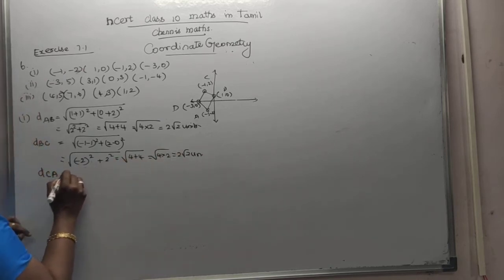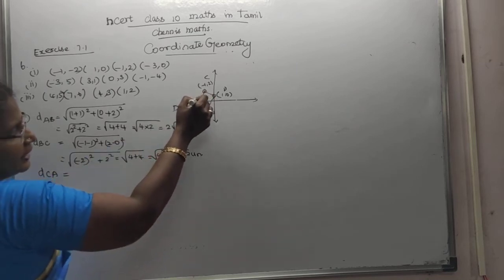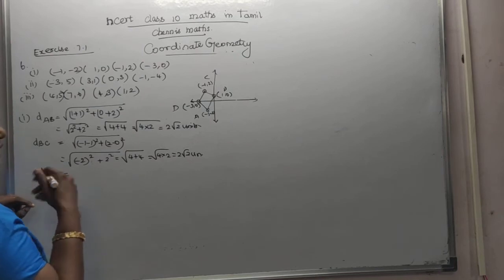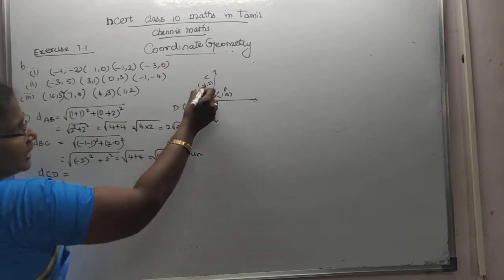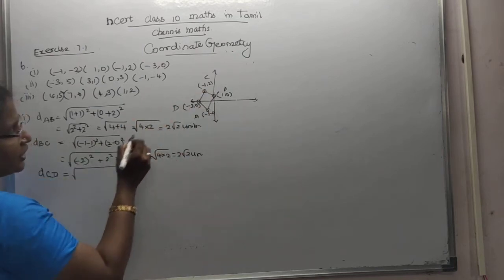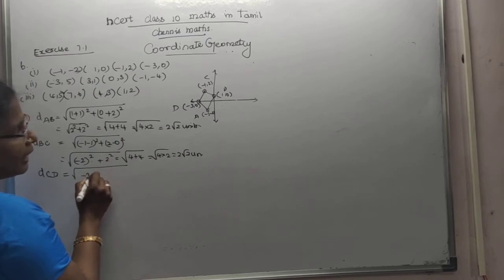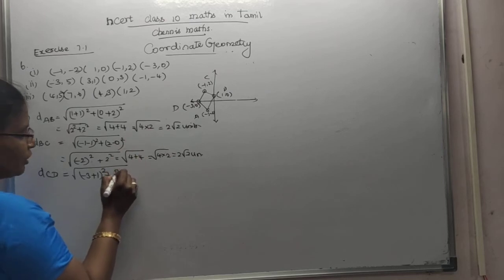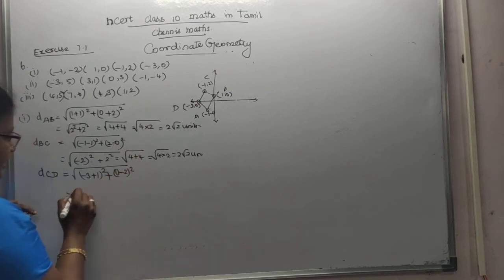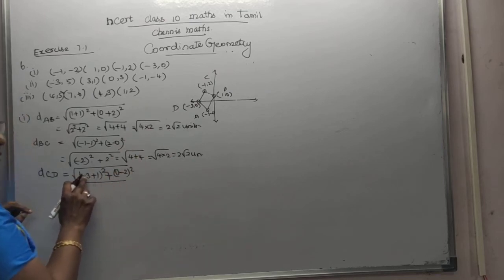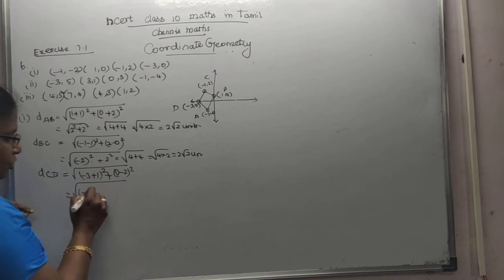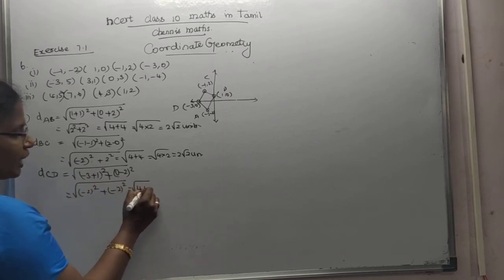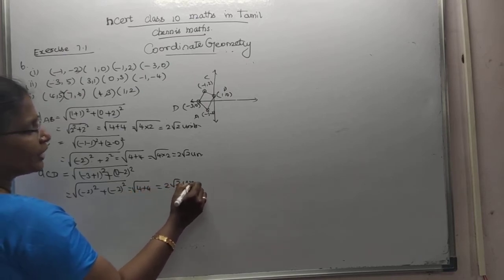Next one is distance of CD. CD is the distance. x2 is minus 3 minus of minus 1, plus 1, the whole square, plus 0 minus 2, the whole square. That is minus 2 the whole square plus minus 2 the whole square. That is 4 plus 4, which is equal to 2 root 2 units. Understood?